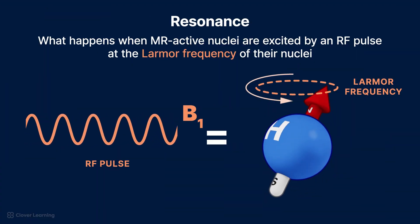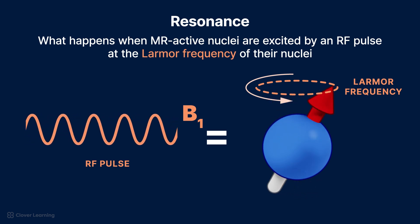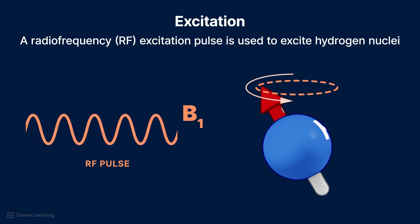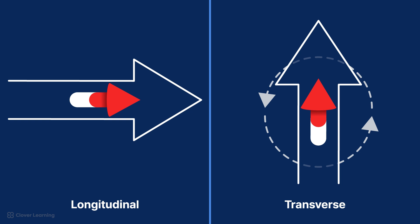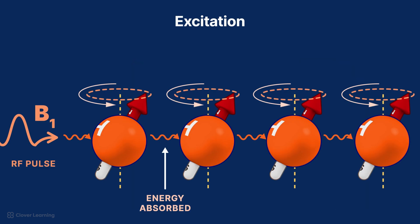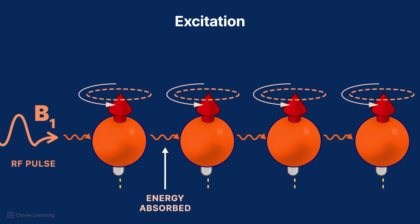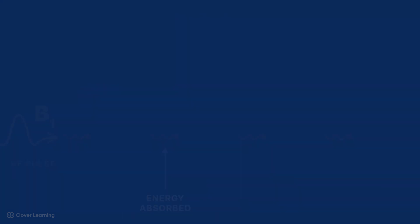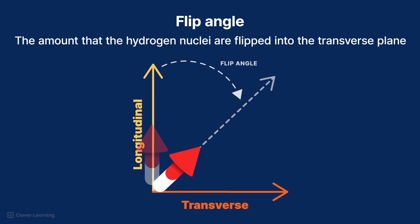In summary, resonance is what happens when MR-active nuclei are excited by an RF pulse at the Larmor frequency of their nuclei. In MRI, a radio frequency, or RF, excitation pulse is used to excite hydrogen nuclei. The energy from the RF pulse is absorbed by the hydrogen nuclei, causing the NMV to flip out of the longitudinal plane into the transverse plane. The same RF excitation pulse causes the magnetic moments of the hydrogen nuclei to precess in phase or in sync with one another. The amount that the hydrogen nuclei are flipped into the transverse plane is called the flip angle.